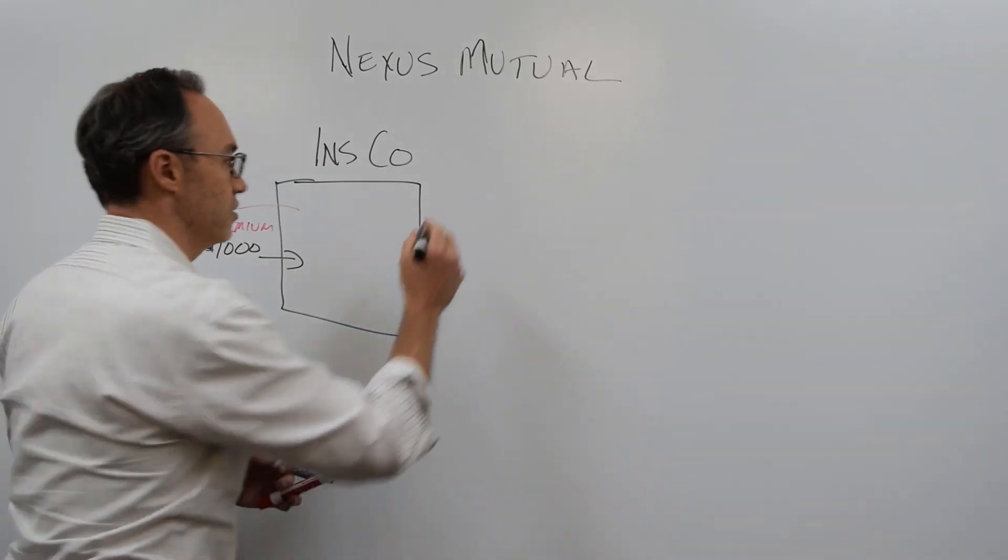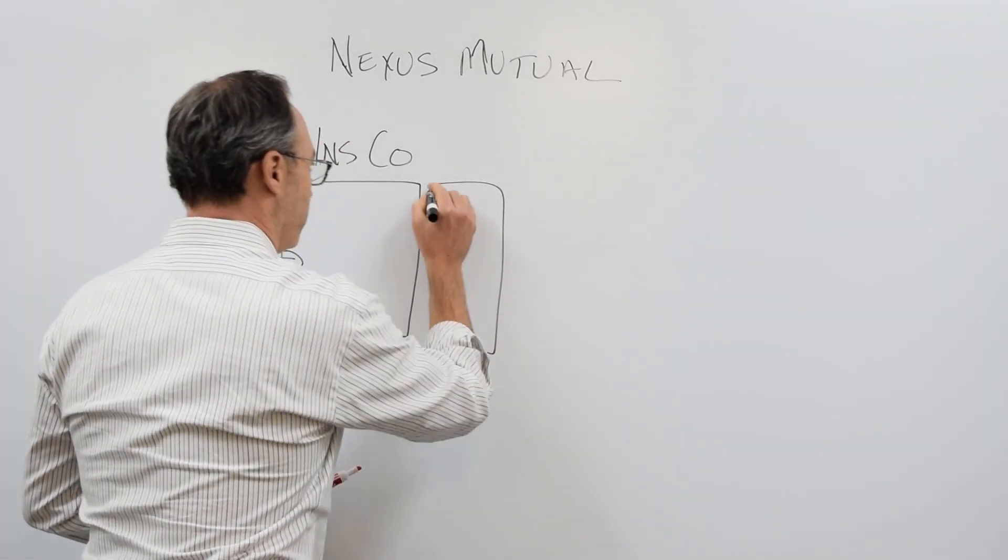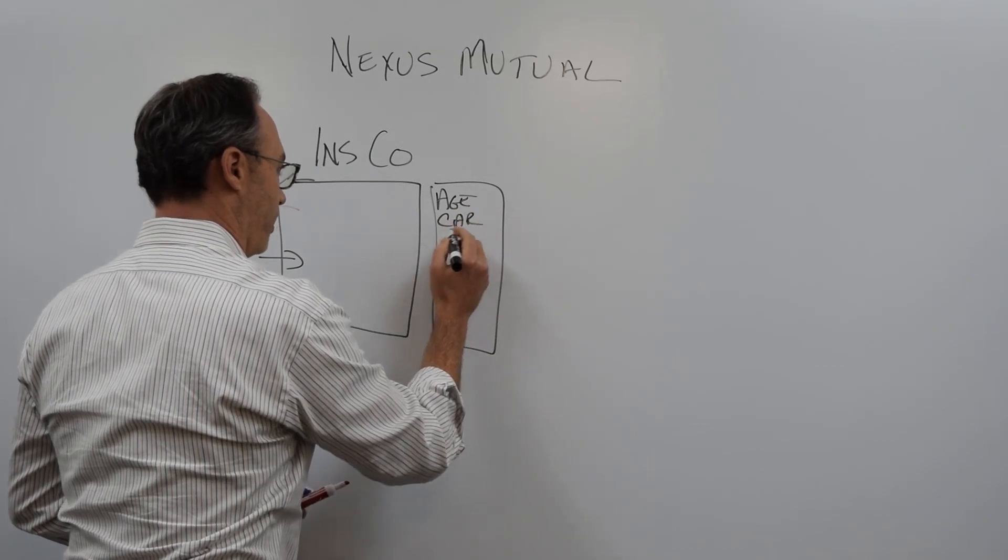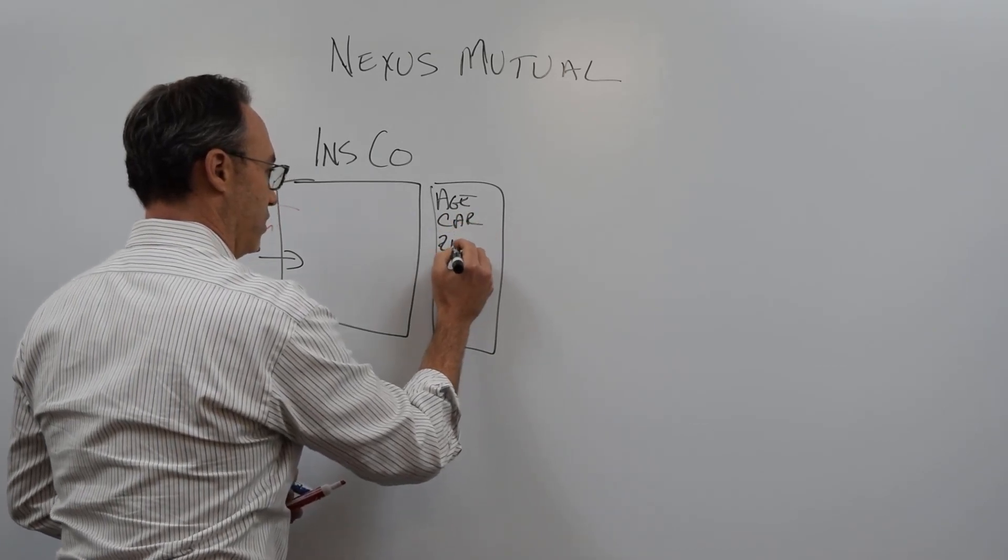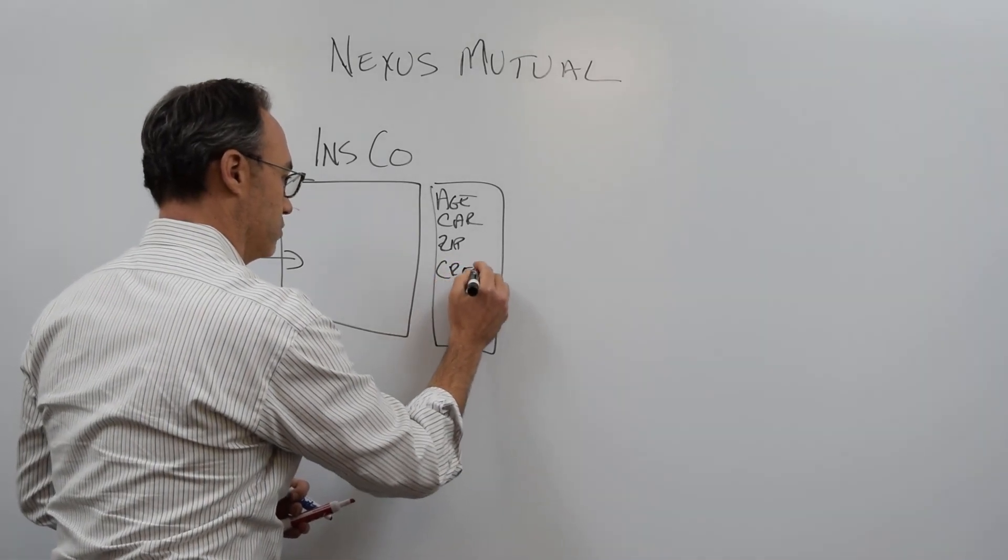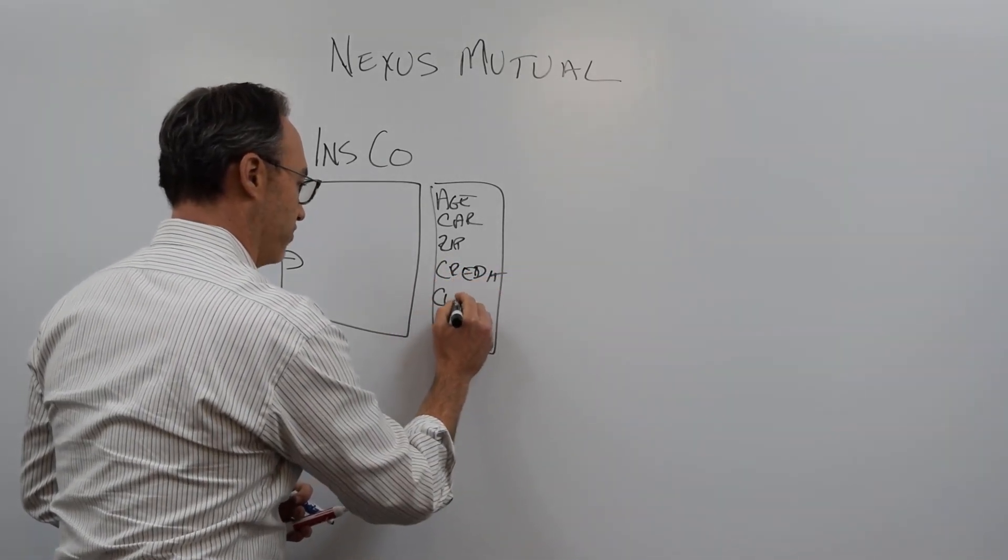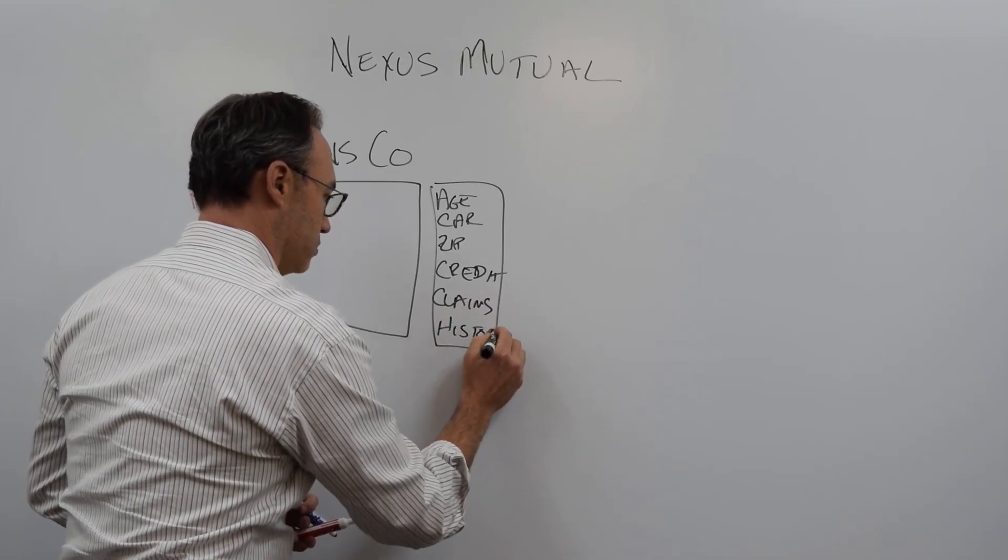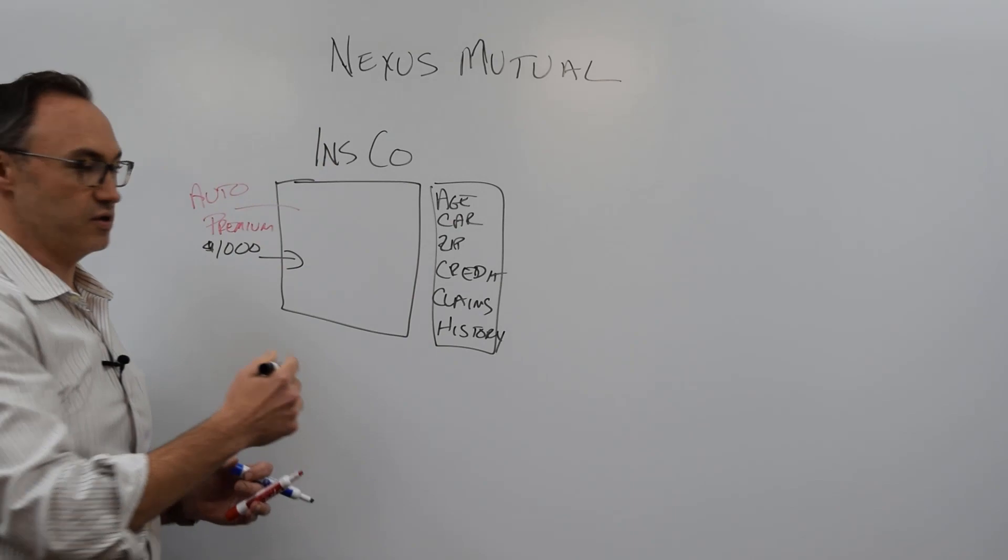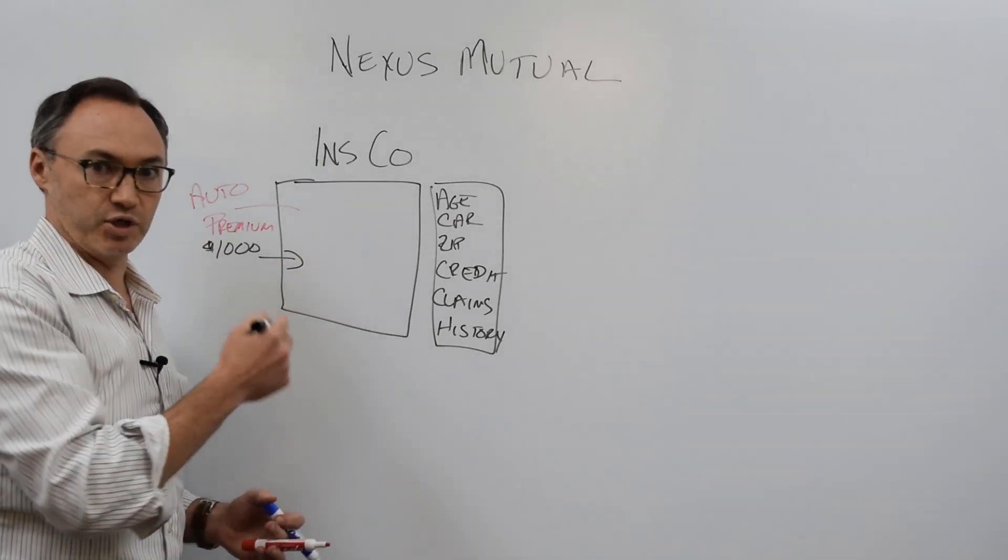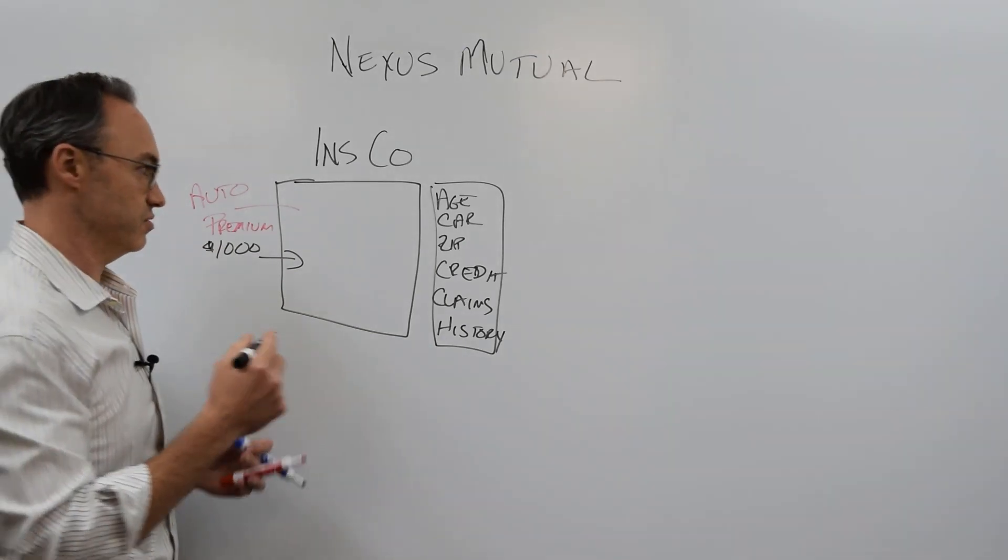Now the insurance company, to arrive at that premium, they look at things like my age, the type of car I have, my zip code where I live, my credit, any claims I've had in the past, so my driving history. They evaluate all those things and plug them in some algorithms and they say, Adam, here's how much you're paying. You're paying us $1,000 a year to cover your car.